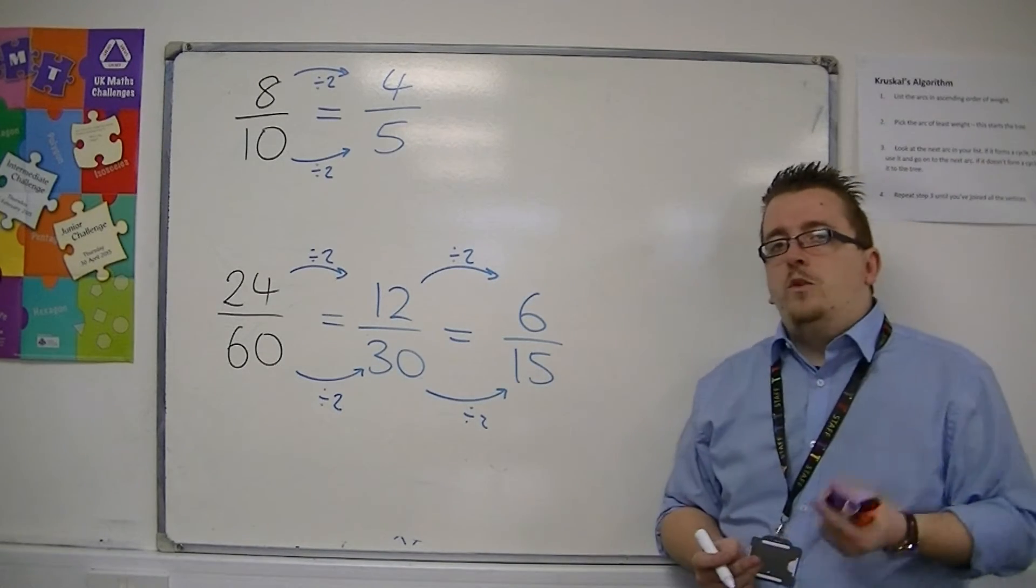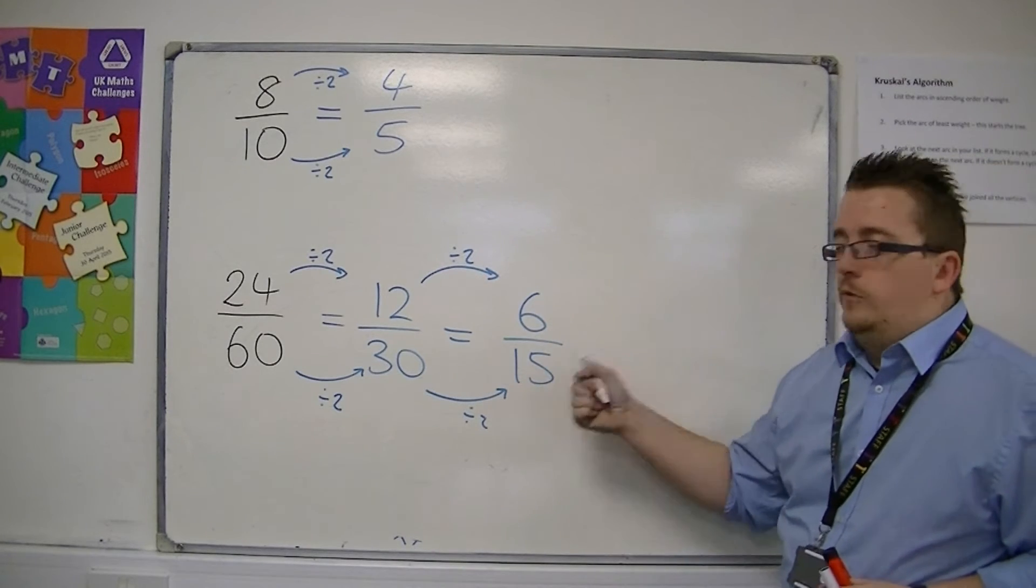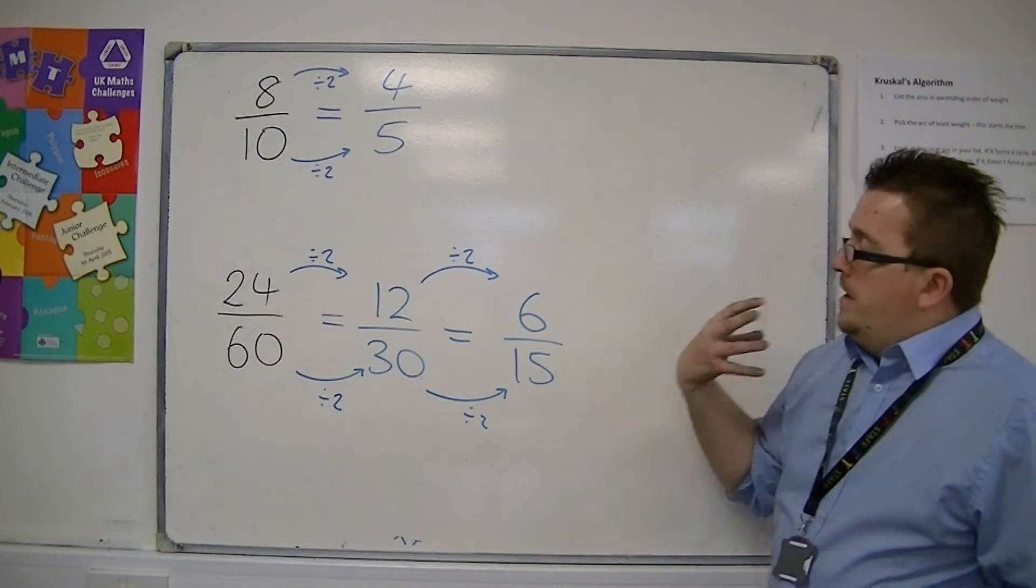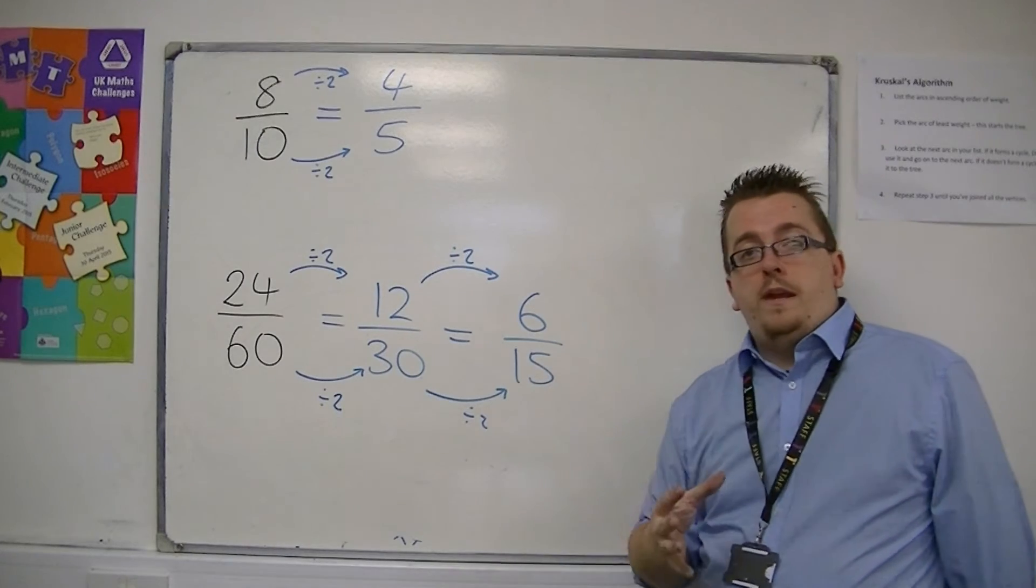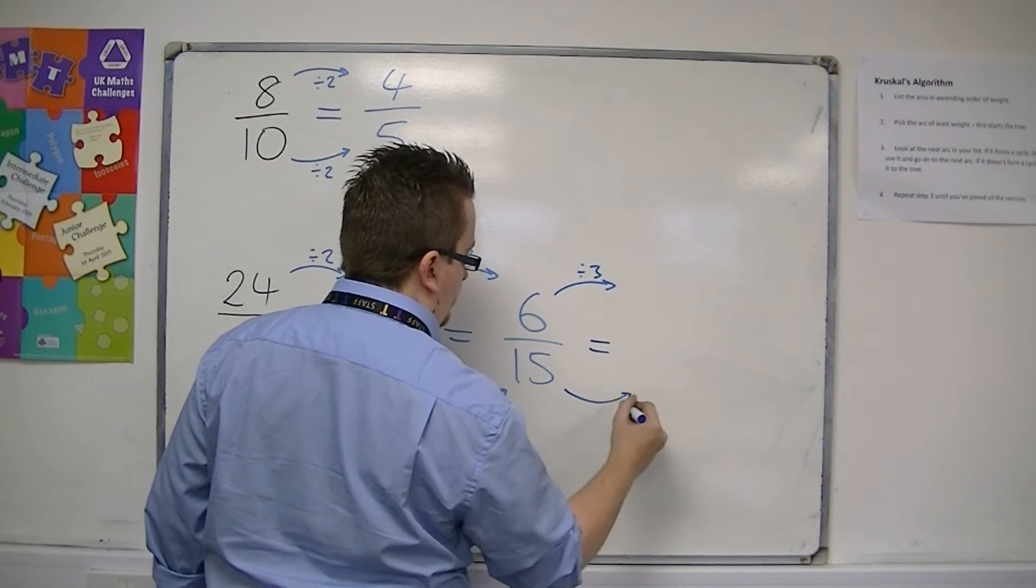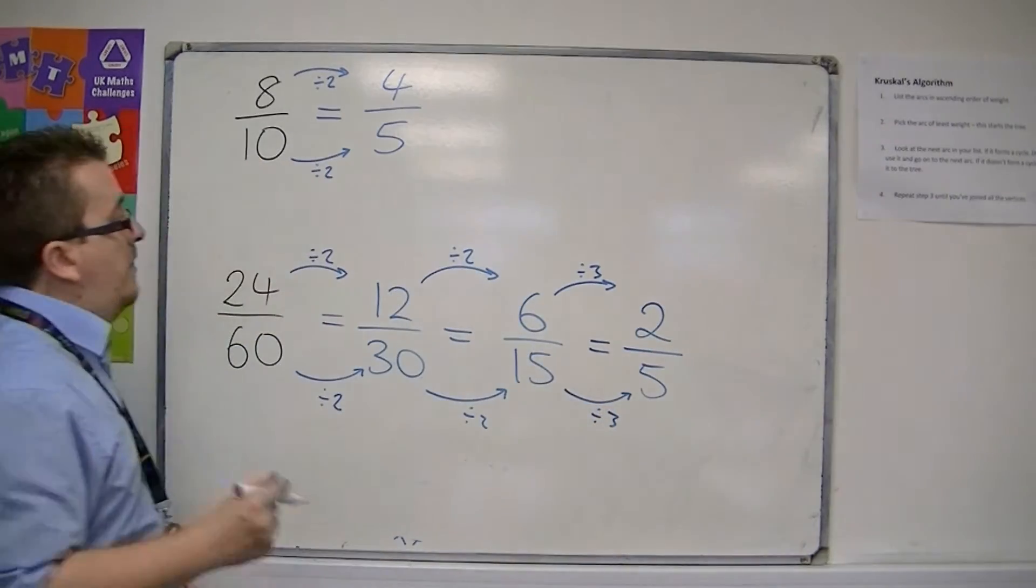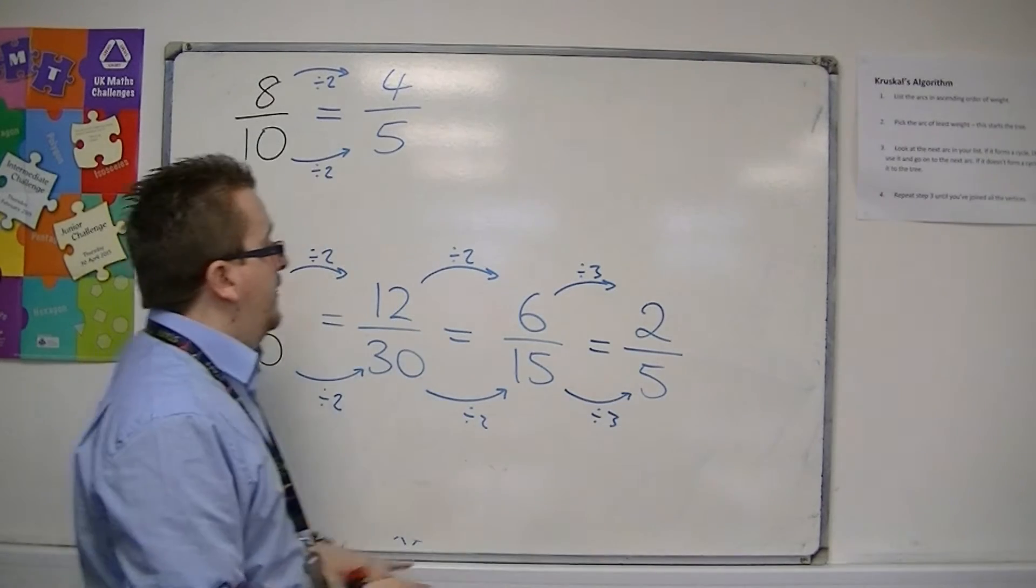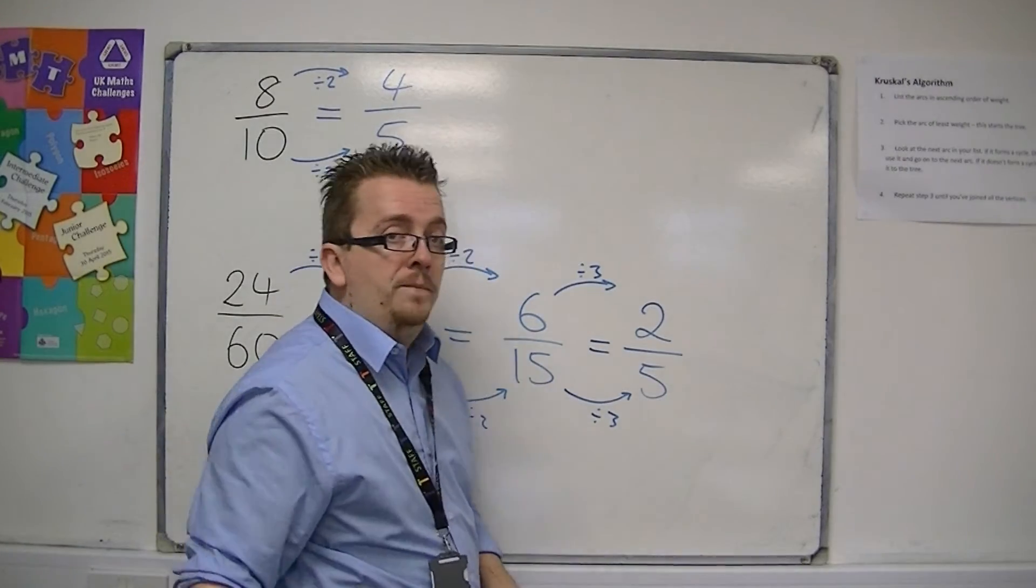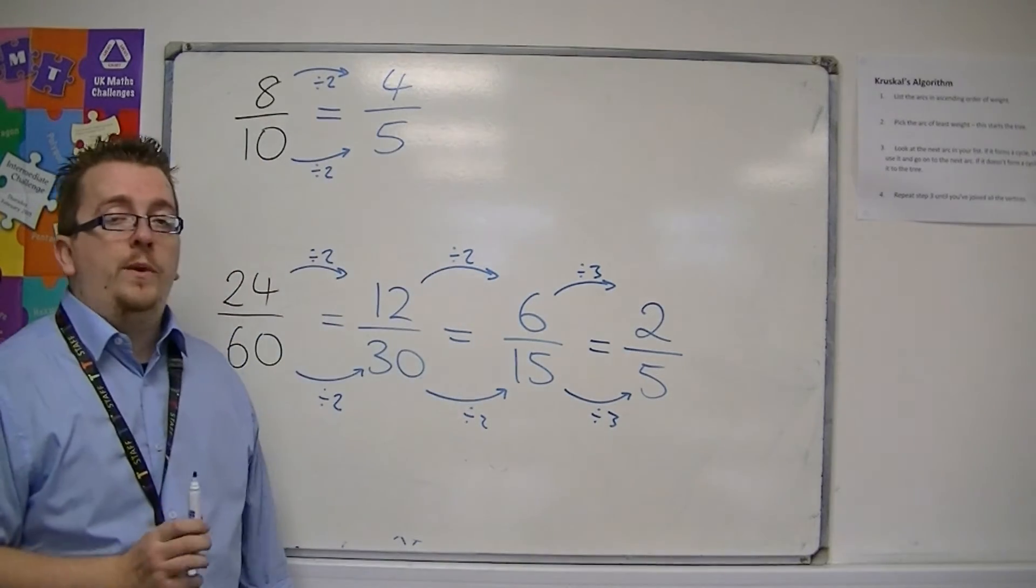And this is really where your times tables are going to come into play. Because now 2 doesn't go into 6 and 15, because 15 is odd. Another number that goes into both, however, is 3. So you can divide top and bottom of the fraction by 3, because they're both in the 3 times table. So we get 2 over 5. And that is as far as I can go. So I have simplified the fraction down from 24 over 60 down to 2 fifths. And once you have gone as far as you can go, this is as simplified as we can make the fraction.